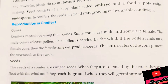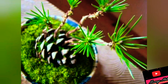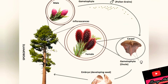Seeds are a baby plant or embryo which have a food supply. Seeds in conifers shed and start growing in favourable conditions. The seeds of conifers are winged seeds — they are released by air, fall down, and start growing.